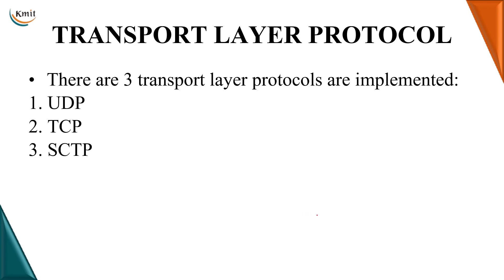Now let us talk about transport layer protocols. We have already learned data link layer protocols like sliding window, and many network layer protocols: IP, IPv4, IPv6, ARP, RARP, BOOTP, DHCP, ICMP, and IGMP. Now we are going to learn about the protocols at the transport layer. The protocols at the transport layer are UDP and TCP, which we will discuss in detail. SCTP is also mentioned — it has the properties of both UDP and TCP.